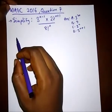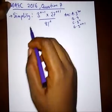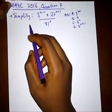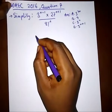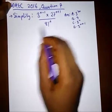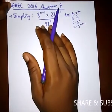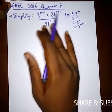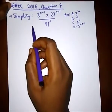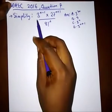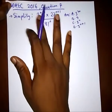Here we have a question from WAEC 2016 question 7. It says simplify 3 raised to the power of n minus 1 multiplied by 27 raised to the power of n plus 1, divided by 81 raised to the power of n. If you remember our law of indices, this is a multiplication and division operation, and we have to make sure our bases are the same — so we simplify to a base of 3.